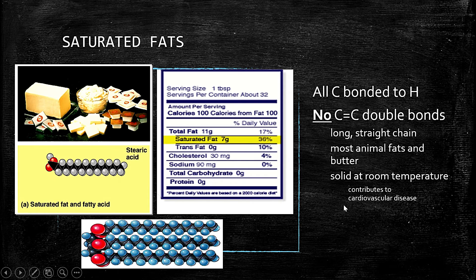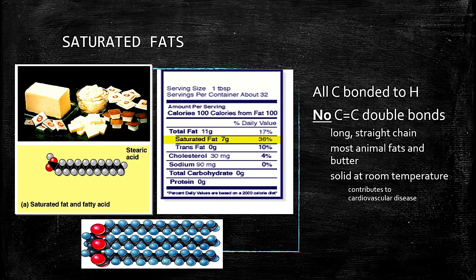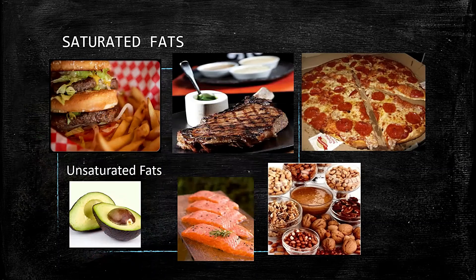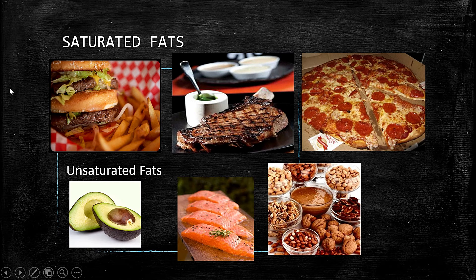Saturated fats can contribute to cardiovascular diseases because they are very rigid — they can harden and stay in place, potentially blocking blood flow. These are the main sources of saturated fats, and most are derived from animals. In contrast, unsaturated fats can be found in fruits, vegetables, and fish.